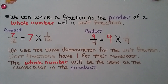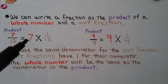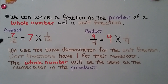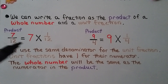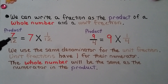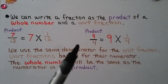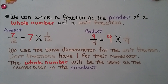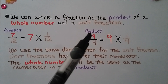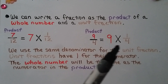We can write a fraction as the product of a whole number and a unit fraction. Here we have 7/12. That's our product, and it's equal to 7 times 1/12. We use the same denominator for the unit fraction, and unit fractions have a 1 for their numerator. The whole number up here will be the same as the numerator in the product — we're using the same denominator. This is telling us there are 7 one-twelfth parts: 7 times 1/12. Here we have a fraction greater than 1, 9/4. The numerator is greater than the denominator, so it's a fraction greater than 1. We use the same denominator, 4, for the unit fraction. Unit fractions have a 1 for a numerator, and the 9 tells us we have 9 one-fourth parts: 9 times 1/4.